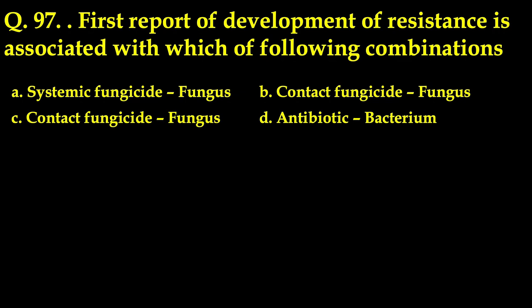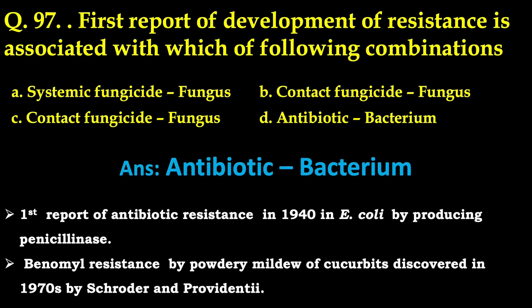The next question: the first report of development of resistance is associated with which combination? The correct answer is antibiotic against bacterium. Soon after the discovery of penicillin, the first report of antibiotic resistance was recorded in 1940 in Escherichia coli by producing penicillinase. This was well before the discovery of systemic fungicides — oxythins by von Schmeling and Kulka in 1966 — and benomyl resistance in powdery mildew of cucurbits discovered in 1970 by Schroeder and Providenti.